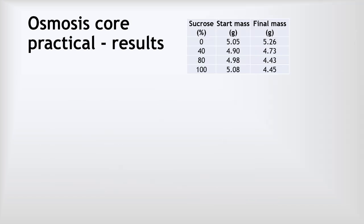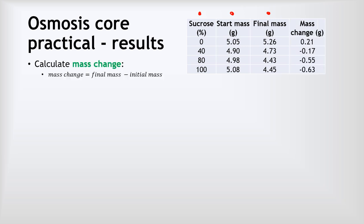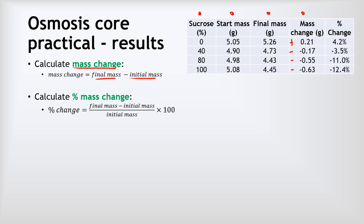We had the concentration of sucrose solution, the initial mass of each chip, and the final mass of each chip. We then did a couple of bits of analysis. First, we calculated the change in mass — the mass change was just the final mass take away the initial mass. Some results were positive: the chip in 0% sucrose solution increased in mass. But most were negative — most of them decreased in mass. Then we calculated the percentage mass change: final mass take away the initial mass, divided by the initial mass, multiplied by 100.